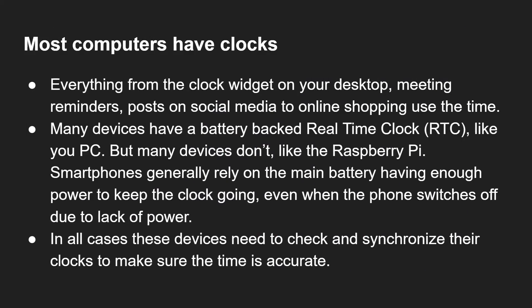Most computers have clocks — everything from the clock widget on your desktop, meeting reminders, posts on social media, online shopping — they all use the time. Many devices have a battery-backed real-time clock (RTC), like your PC, but some devices don't. For example, the Raspberry Pi does not come with a battery-backed real-time clock. Smartphones rely on the main battery to have enough power, and even when your phone shuts down, there's often still enough power to keep the clock going. But in all cases, all of these devices need to check they have the correct time and synchronise it to make sure it is accurate.